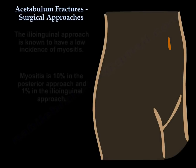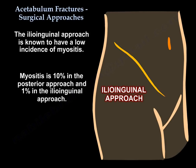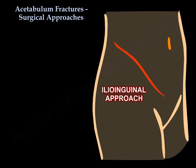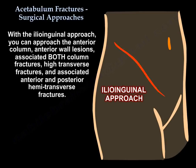The ilioinguinal approach is known to have a low incidence of myositis. Myositis is 10% in the posterior approach and 1% in the ilioinguinal approach. The ilioinguinal approach can address anterior column and anterior wall lesions, associated both column fractures, and high transverse fractures.